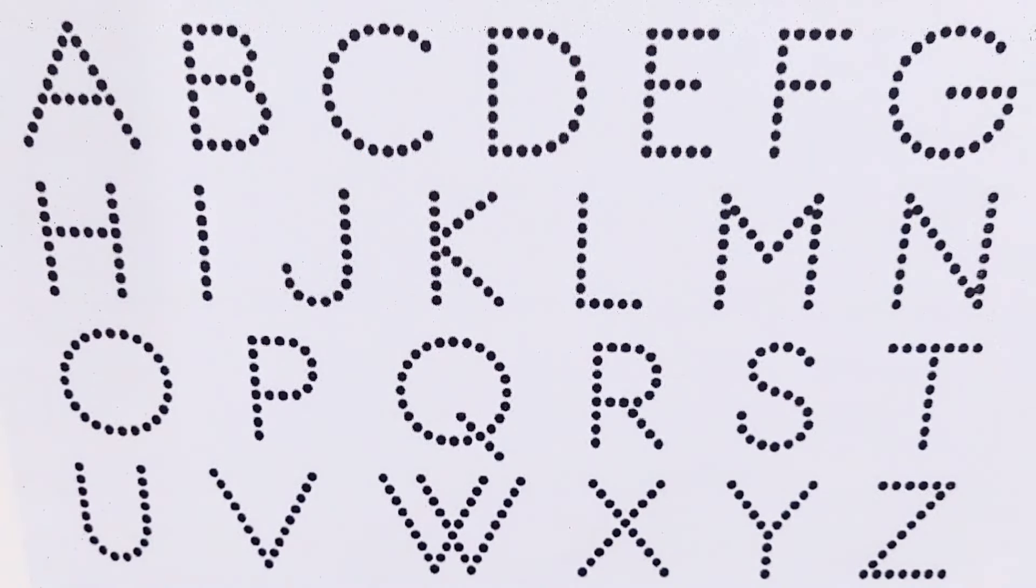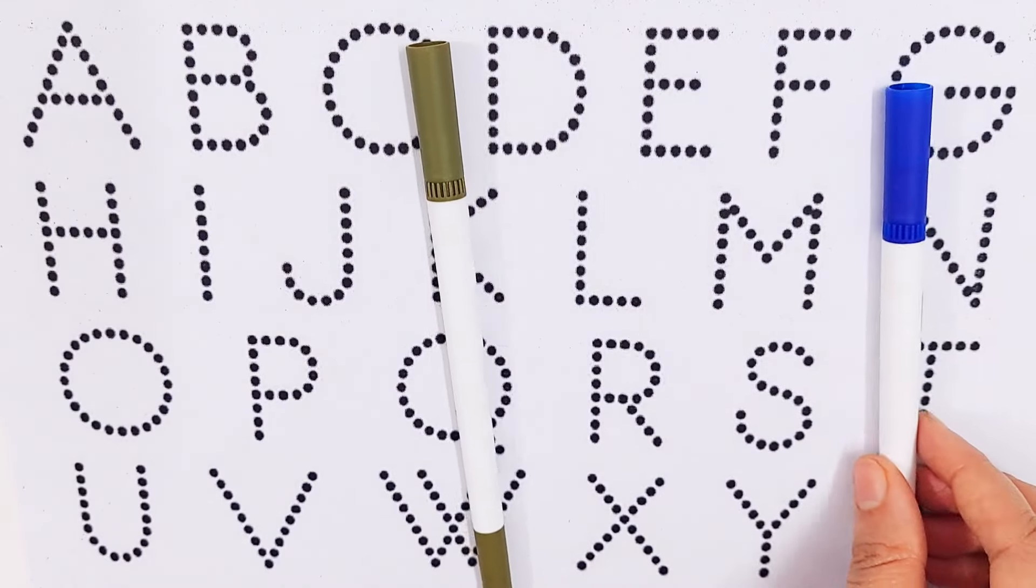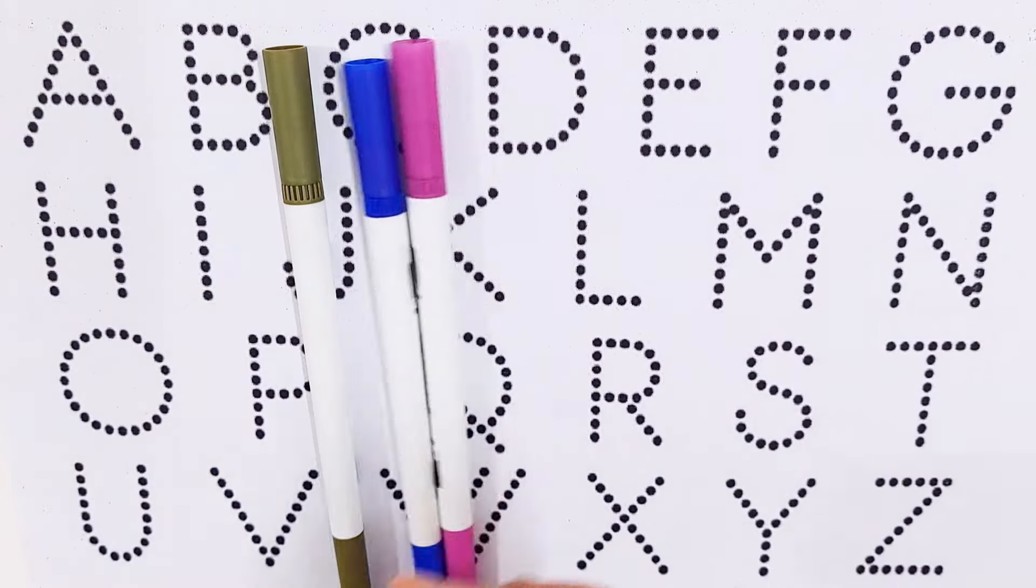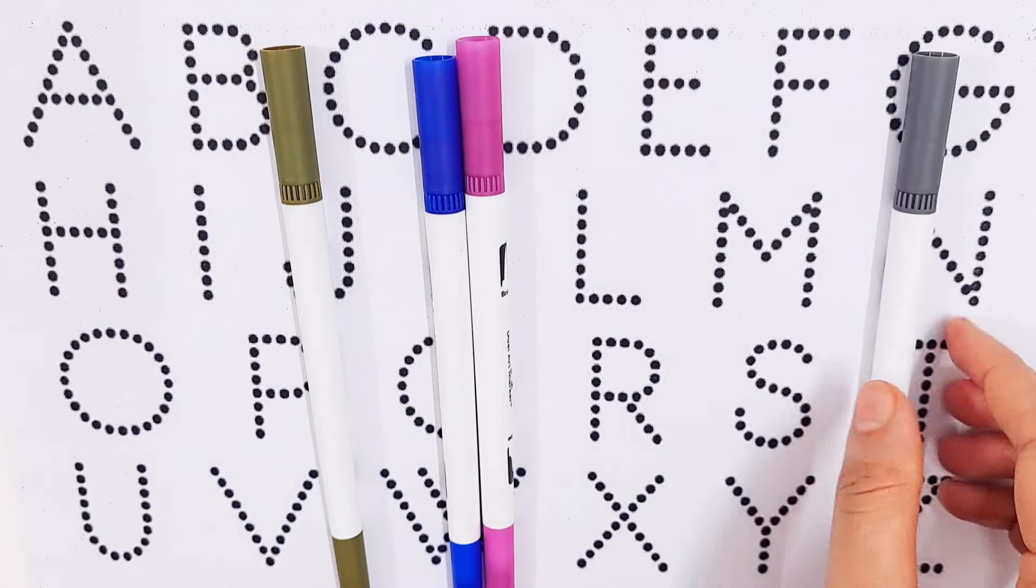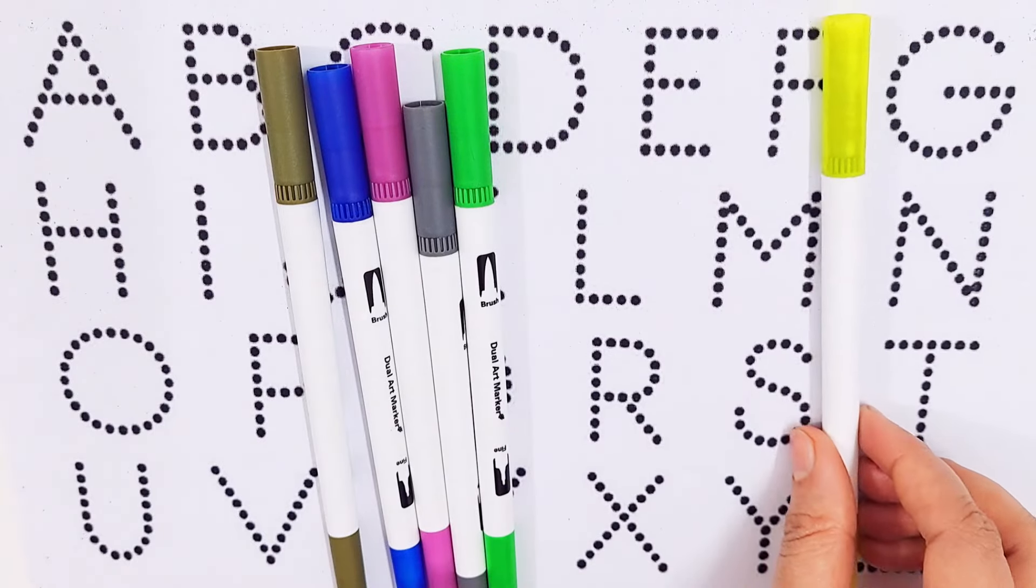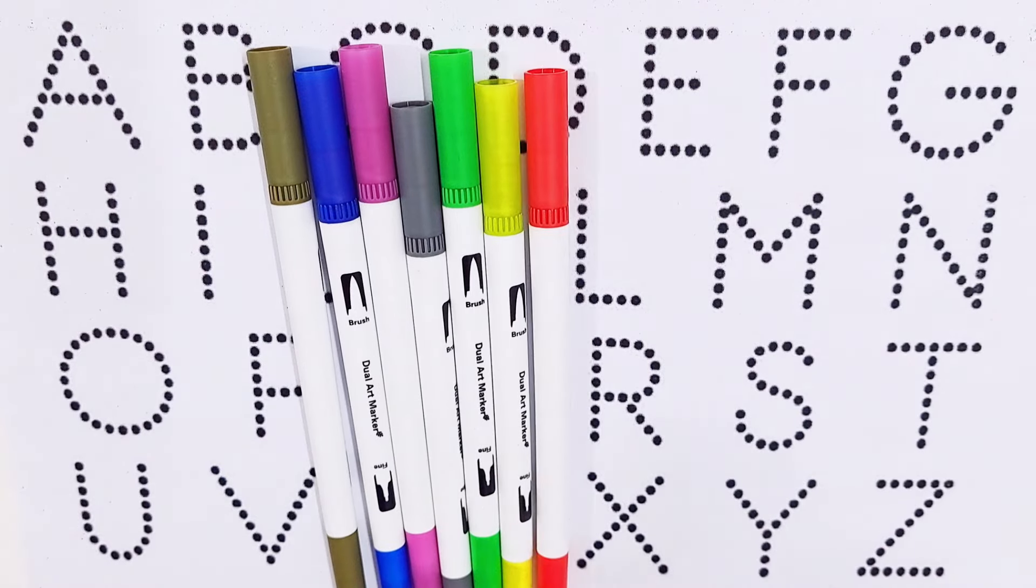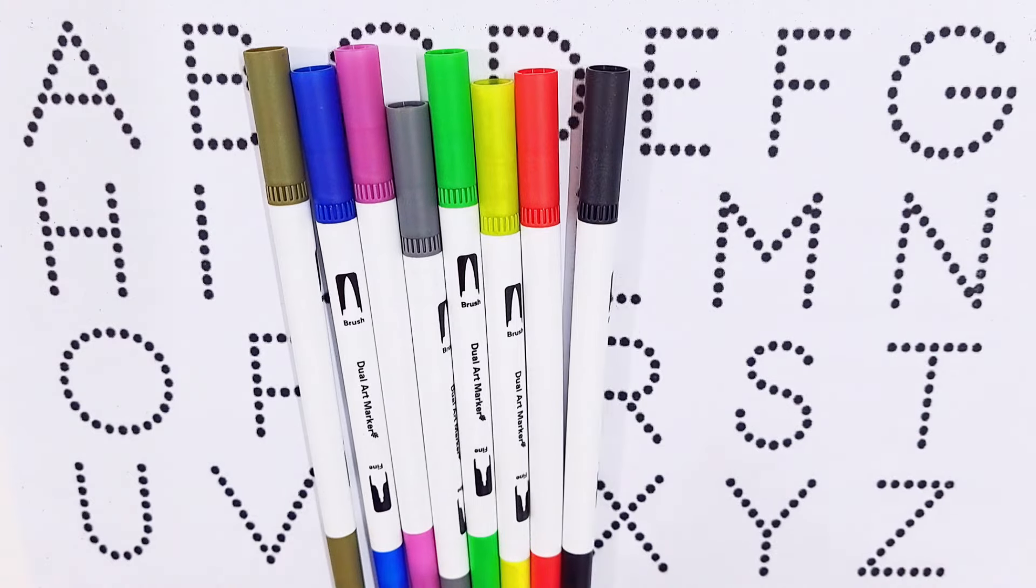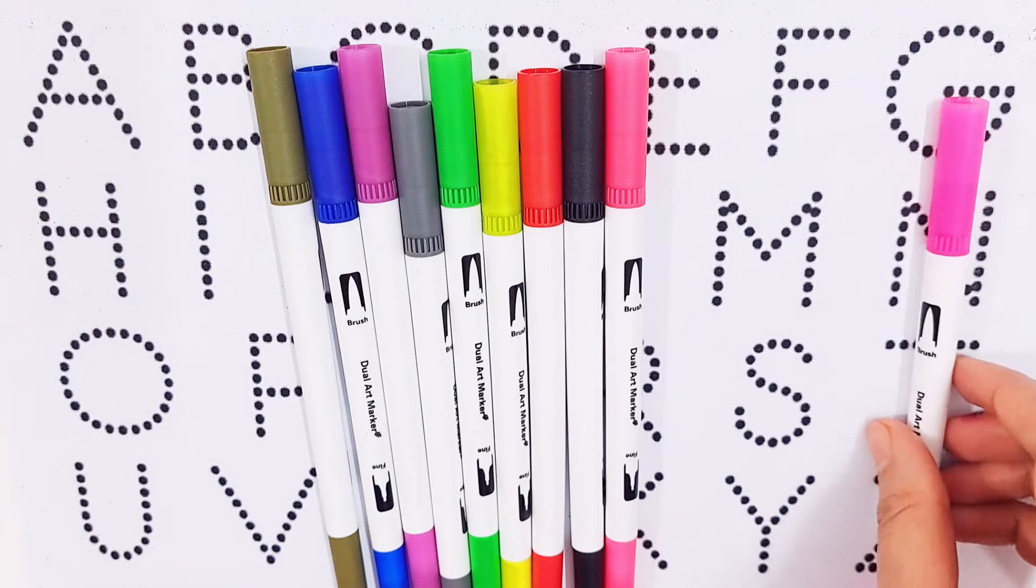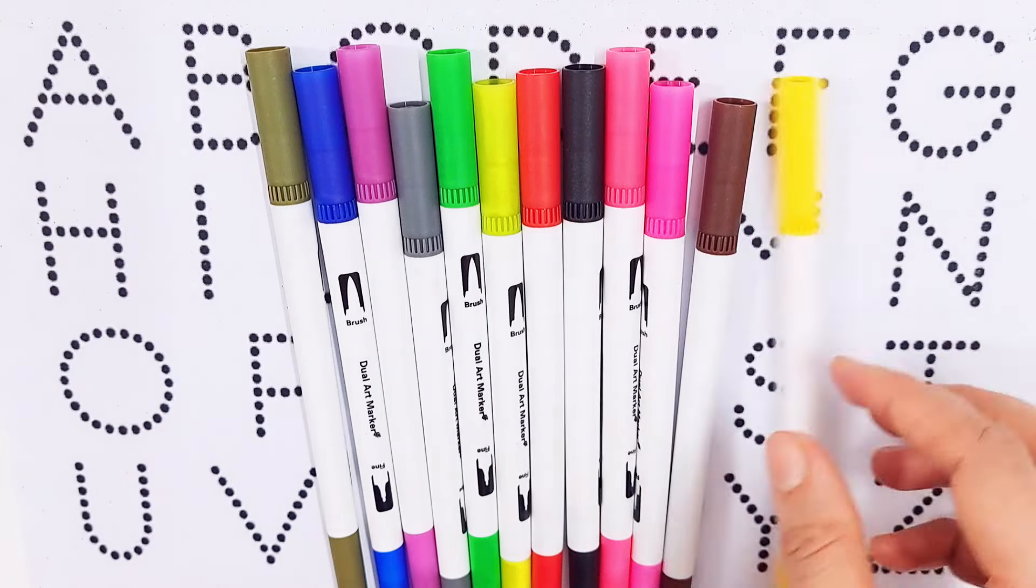Hello guys, let's learn some color names: olive color, dark blue color, violet color, gray color, green color, lime color, red color, black color, pink color, purple color, brown color, yellow color.